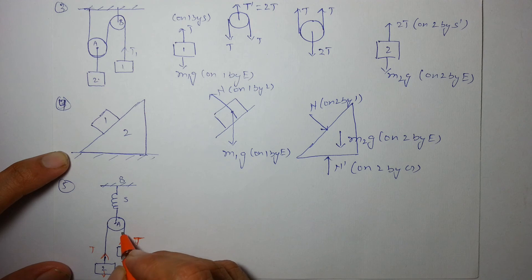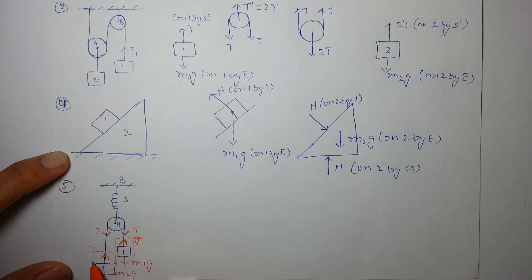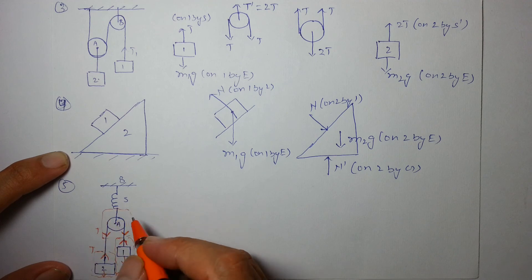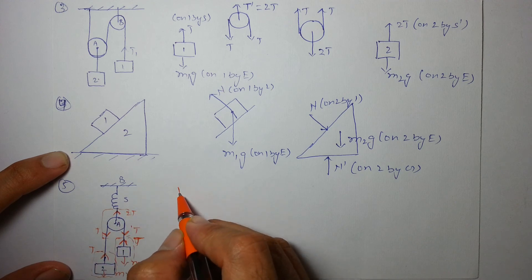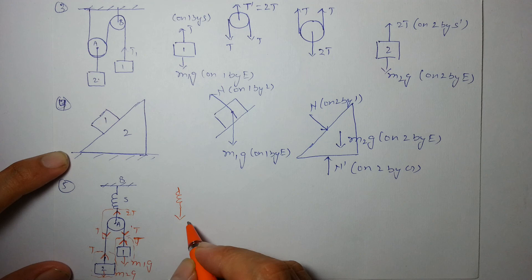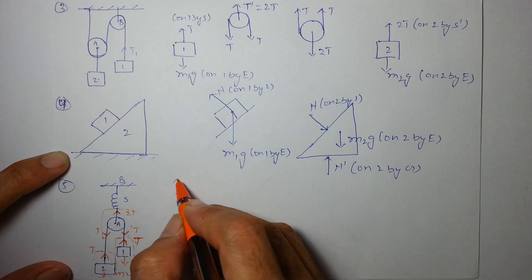So on the pulley it will be t, so just isolate them. This is I'm creating some blocks which will have FBD of the pulley as well as this block one and block two.